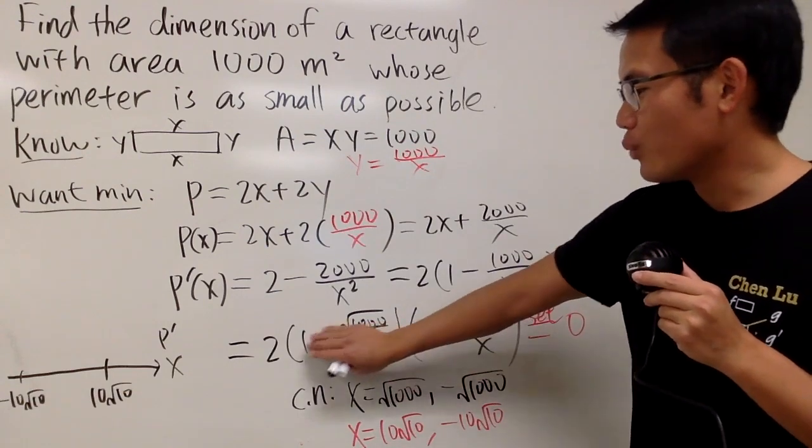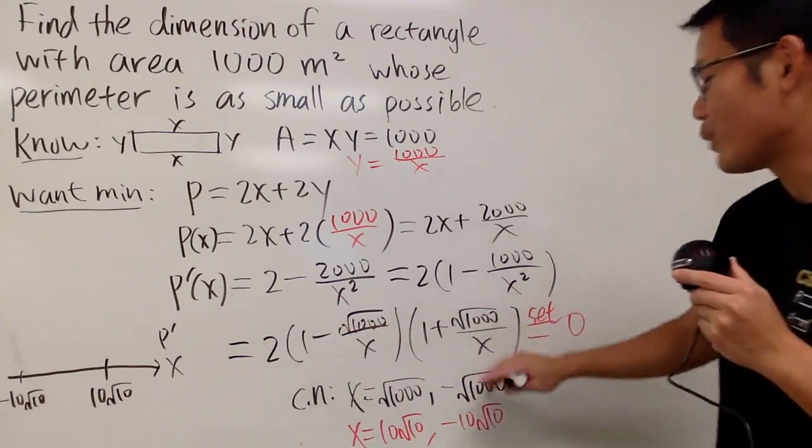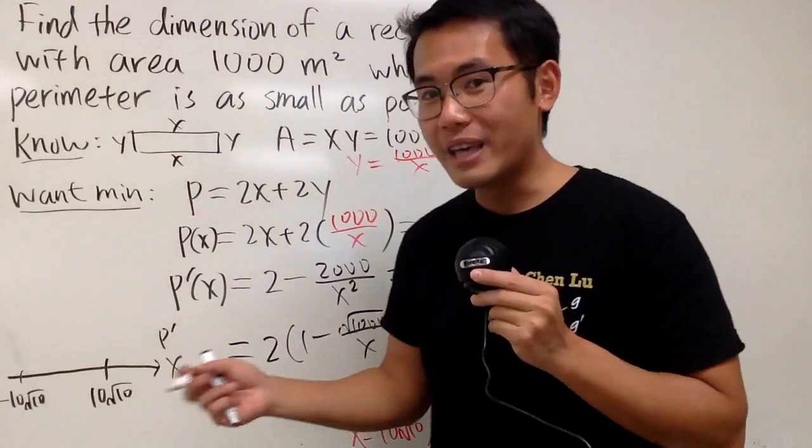So, if you put 1 right here, you get 1 minus square root of 1000, which is going to be negative. Put 1 right here, you get positive. So, all in all, we get negative.